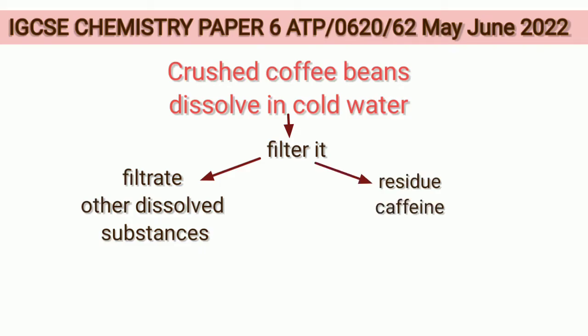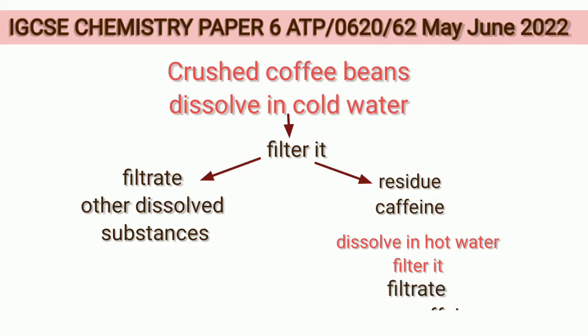We will then dissolve this residue in hot water and filter it. Now the filtrate contains caffeine, since it is soluble in hot water. We then need to evaporate the water present in the filtrate to obtain pure caffeine crystals. Our plan is ready — let us start writing it.